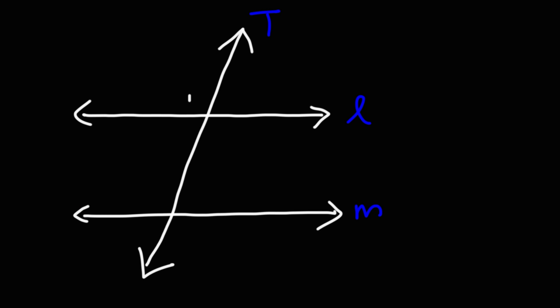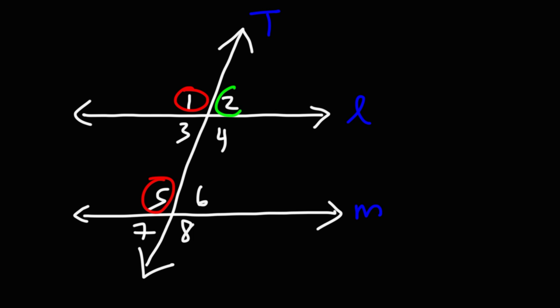So we have the angles 1, 2, 3, 4, 5, 6, 7, 8. So which of these angles are corresponding angles? Angle 1 corresponds to angle 5. Angle 2 corresponds to angle 6. Angle 3 and 7 are corresponding angles. And 4 and 8 are corresponding angles.